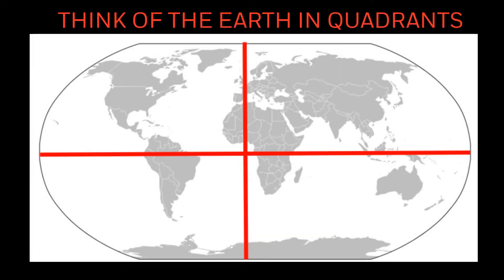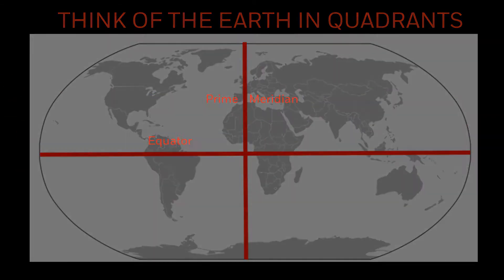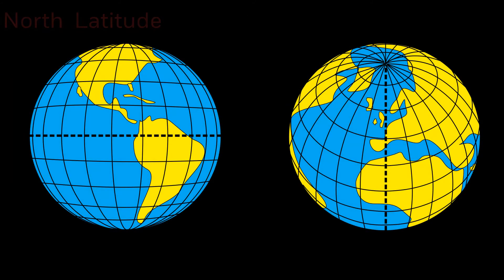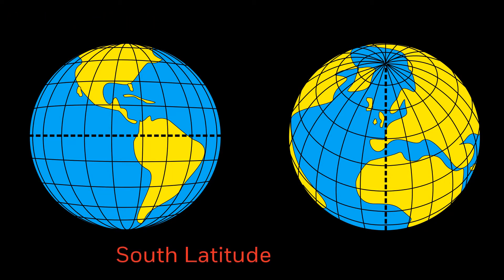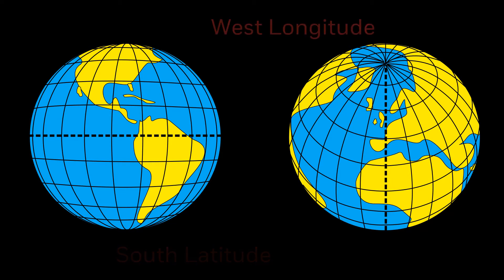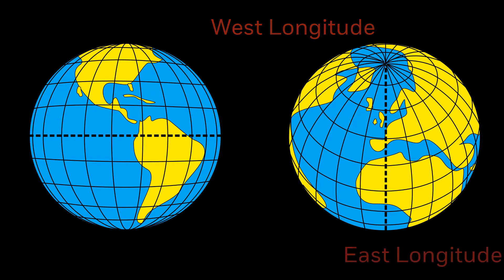To begin, picture the Earth divided into quadrants based on the equator and the prime meridian. Any point north of the equator can be referenced as north latitude, and south of the equator as south latitude. The prime meridian works the same way, only in the vertical axis. West of the prime meridian becomes west longitude, and east becomes east longitude.